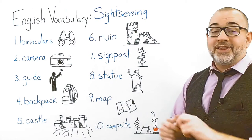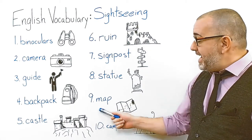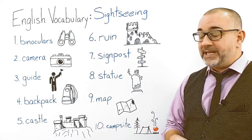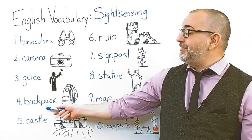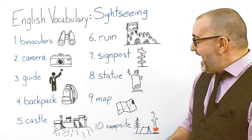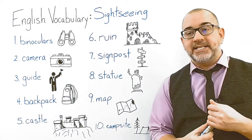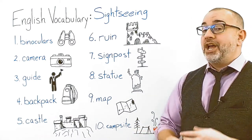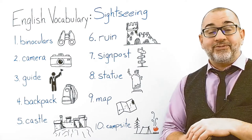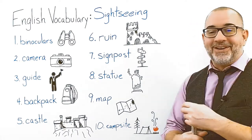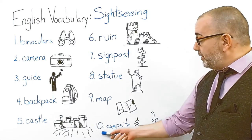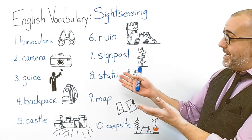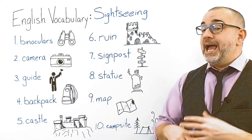Number eight, statue. My picture is of the Statue of Liberty. The Statue of Liberty is located in the USA. Number nine, map. I'm lost — where is our map? Can you get your map out of your backpack? And our last word, campsite. We had a lot of fun sleeping in the campsite. The weather was warm, there were lots of friendly people, and we roasted marshmallows on the fire.